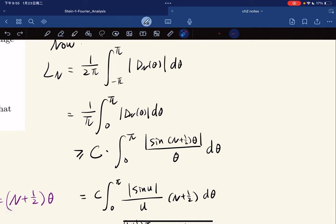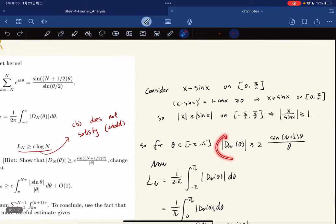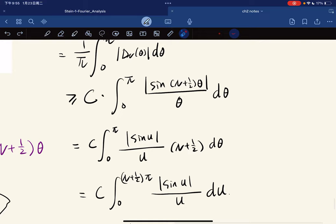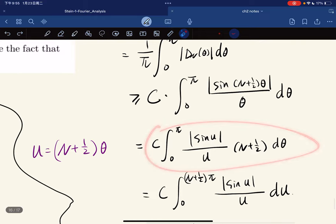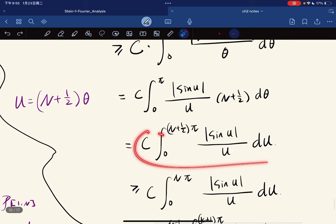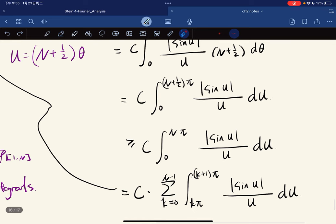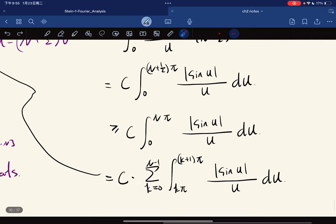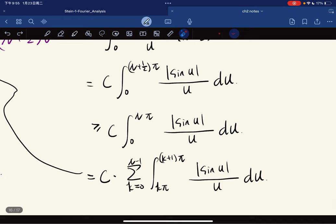This is greater than some constant times this—we've proven this. We change variables: let u equal (n+1)/2 times θ. After change of variables, we get this. Because this is non-negative, we make the bound a bit smaller.